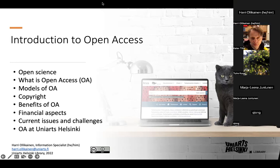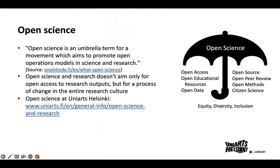Open science is an umbrella term, defined as a movement which aims to promote open operational models in science and research. The definition may vary depending on who you ask, so it doesn't only refer to open access publishing. Openness and transparency have always been part of responsible science, but certain current scientific practices in publishing are in conflict with the principles of open science.